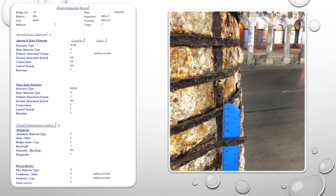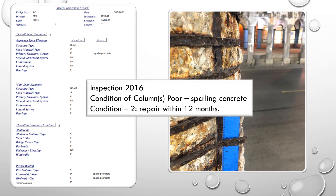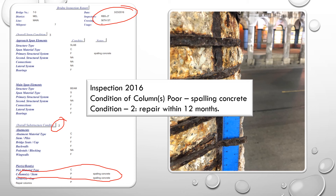This is a classic example of a structure that's been reviewed year after year. Looking at the inspection report shown here — a report from 2016 — the overall structure is called a two. In particular, the columns are spalling and called poor. I would suggest they should have been repaired by now. Through a freedom of information request, I've found out that they have continued to kick the can and done nothing.